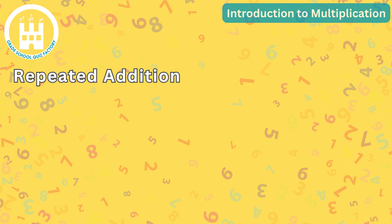If skip counting is a bit challenging for your multiplication adventure, don't worry. We can also use repeated addition. For example, to solve 2 times 4, we can think of it as adding 2 four times: 2 plus 2 plus 2 plus 2 equals 8. So 2 times 4 equals 8.